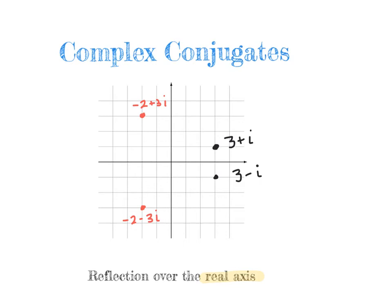Another thing I want to touch on quickly is what complex conjugates look like in the complex plane. Remember, a conjugate is where just the sign of the imaginary number changes. So 3 plus i and 3 minus i, or negative 2 plus 3i and negative 2 minus 3i. You'll notice that when you graph them in a complex plane, it's really just a reflection over the real axis — which is what used to be the x-axis.